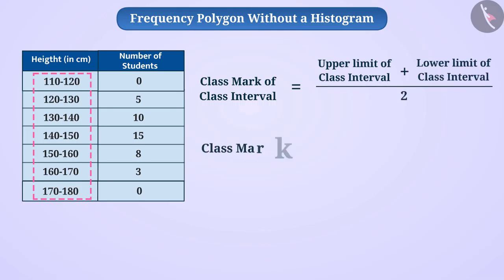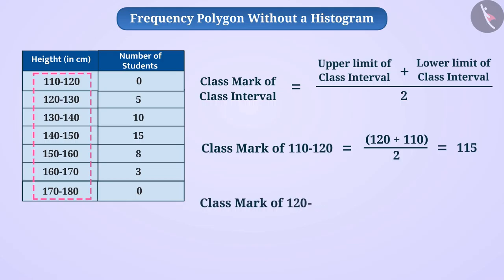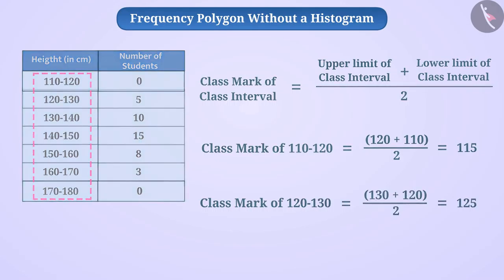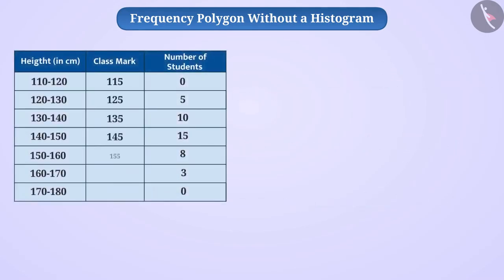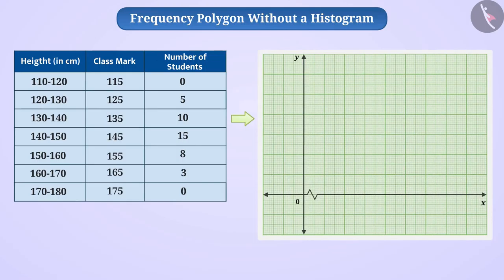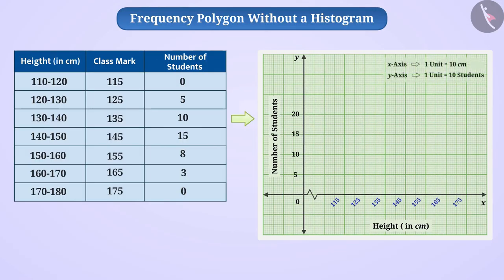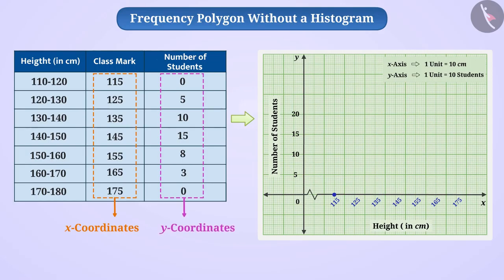Therefore, the class mark of 110 to 120 is 115. Similarly, the class mark of class interval 120 to 130 is 125. We find the class marks of all class intervals in the same way. Now, we draw the x-axis and y-axis, representing class marks on the x-axis and frequency on the y-axis. Taking an appropriate scale on both axes, we represent different points, taking class marks as x-coordinates and their corresponding frequencies as y-coordinates.